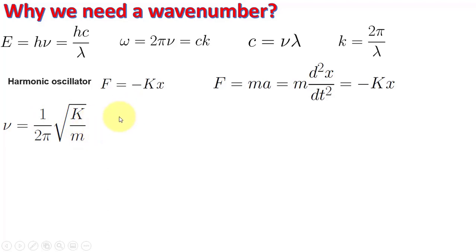Now I can change this equation by dividing this ν by c. Then this ν by c from this equation will be equal to 1 over λ. So 1 over λ I define as k, and this is equal to 1 over 2πc times square root of K over m.